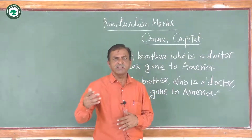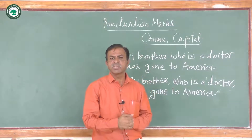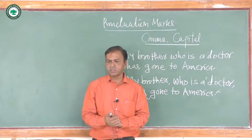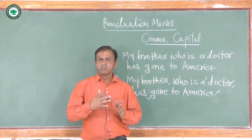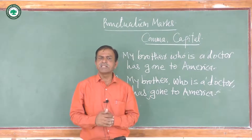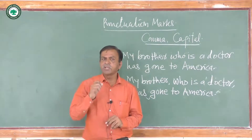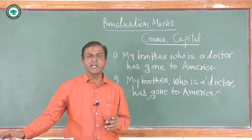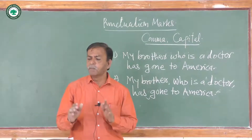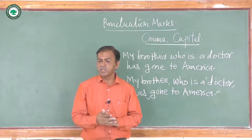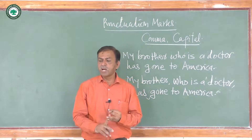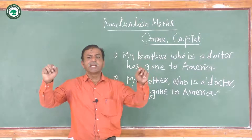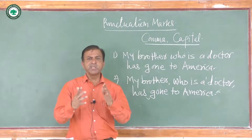When we say 'English novelist,' English is the name of a language, so 'E' should be written in capital letters. Literary works also include the name of magazines, periodicals, articles, films, days — for example Friday, Saturday — the name of months like January, February, the name of religions, the name of castes, the name of newspapers, and headlines. The first letter should always be written in capital.